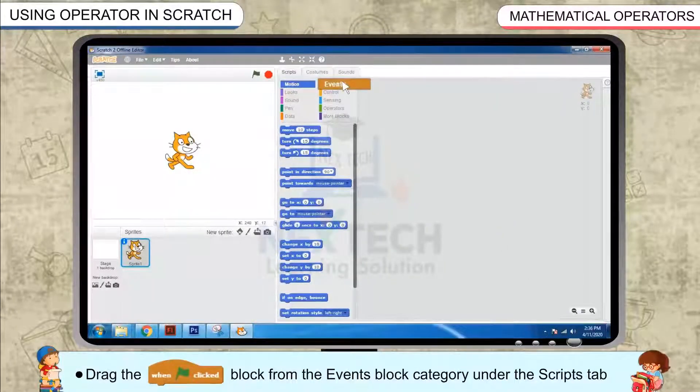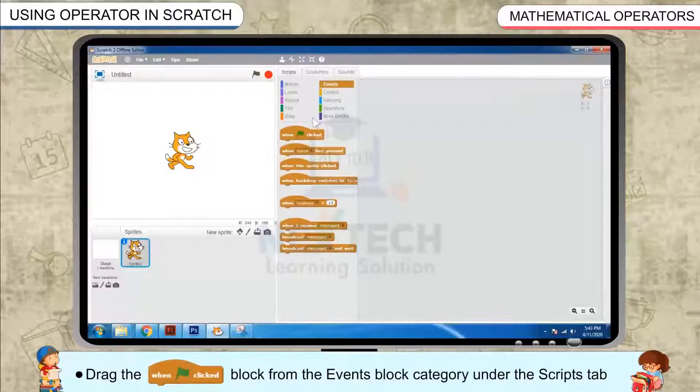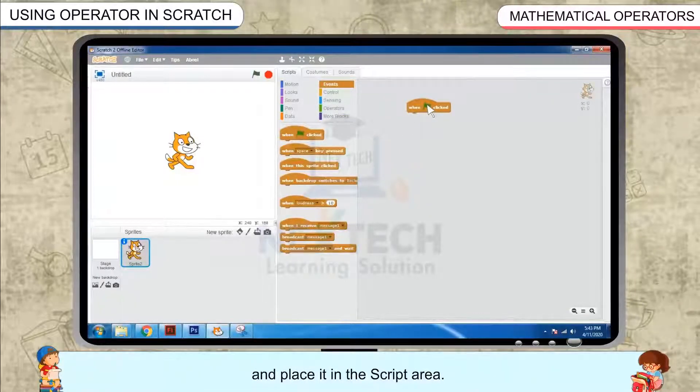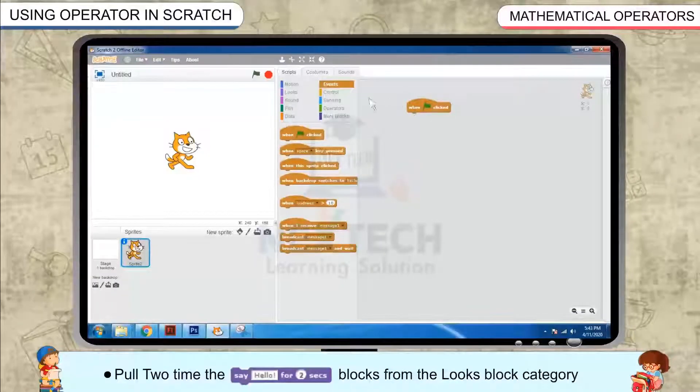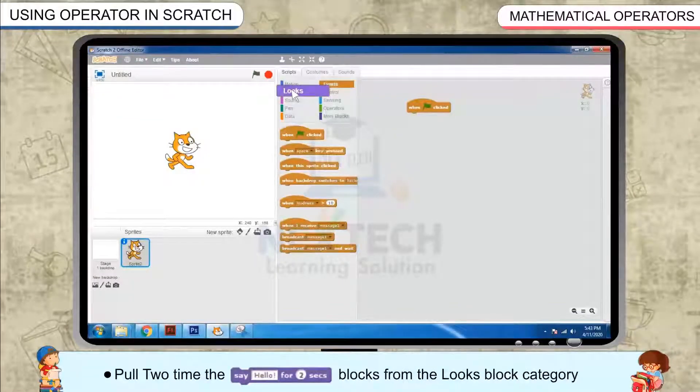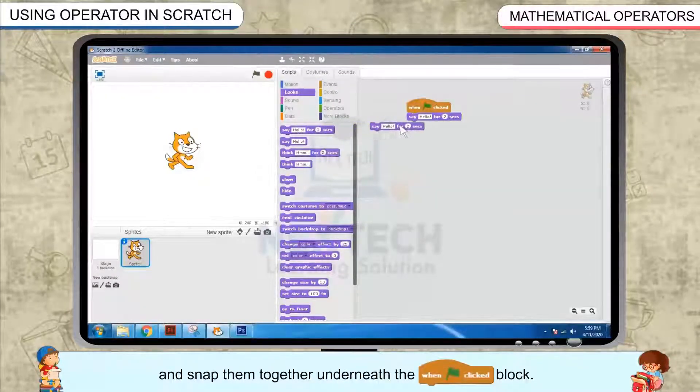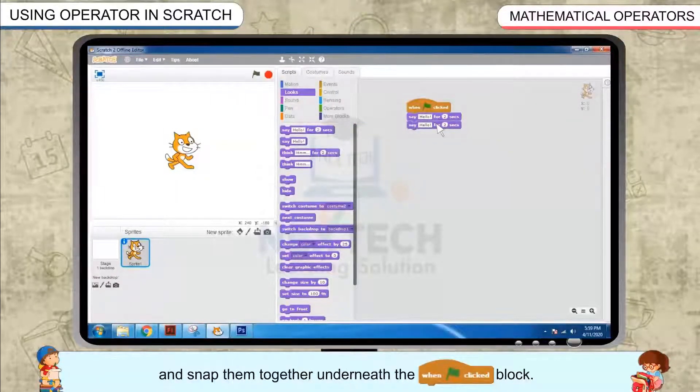Drag the When Flag Clicked block from the Events block category under the Scripts tab and place it in the script area. Pull two times the Say Hello for 2 Seconds blocks from the Looks block category and snap them together underneath the When Flag Clicked block.